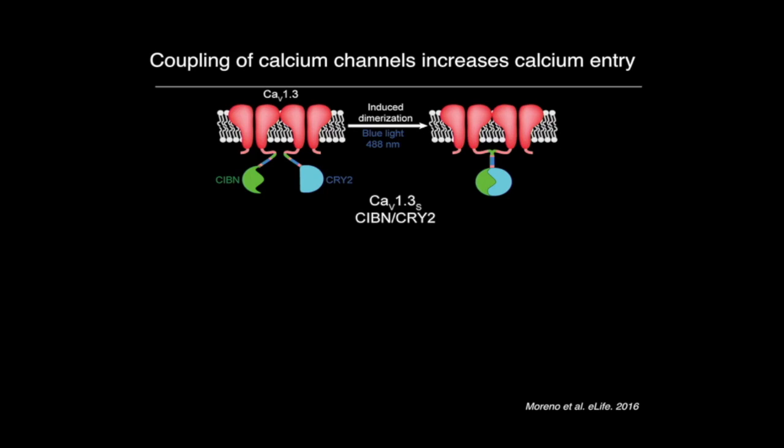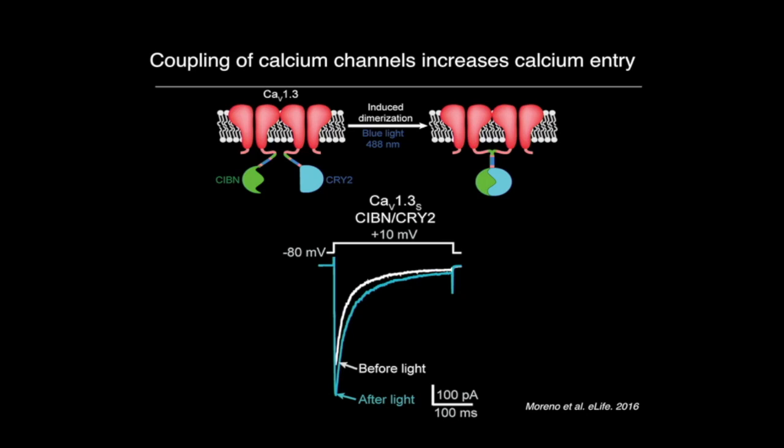We measured the function of the channels by electrophysiology, measuring the current flowing through the channels — how much calcium we are getting into the cell. We can see a certain amount of current entering the cell before forcing interaction, and this goes up after we force the channels to interact. Basically, forcing the channels to interact increases the amount of calcium that the channels let into the cell.